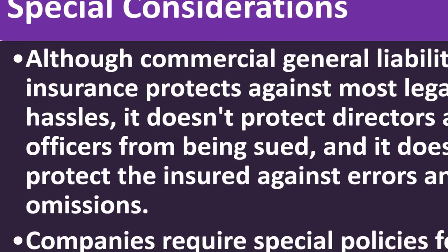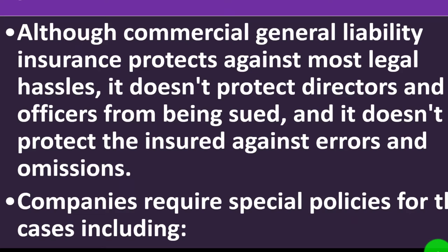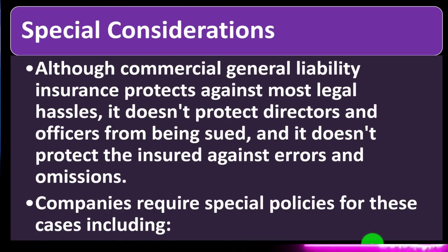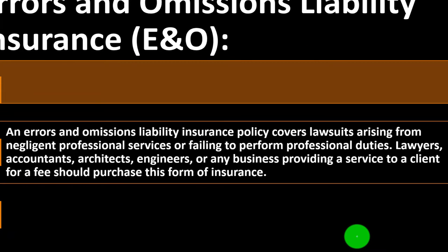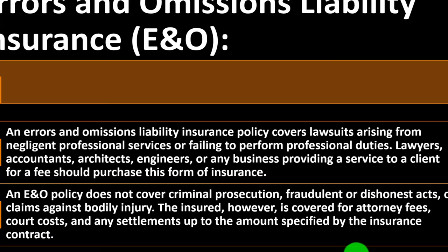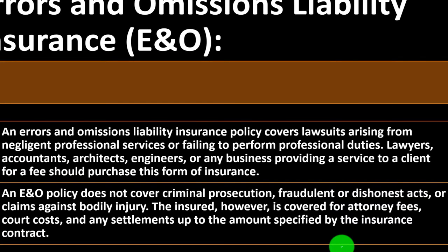Special considerations: although commercial general liability insurance protects against most legal hassles, it doesn't protect directors and officers from being sued, nor does it protect against errors and omissions. Companies require special policies for these cases. Errors and omissions liability insurance, otherwise known as E&O, covers lawsuits arising from negligent professional services or failing to perform professional duties. Accountants, architects, engineers, and any other business providing services to a client for a fee should purchase this form of insurance.